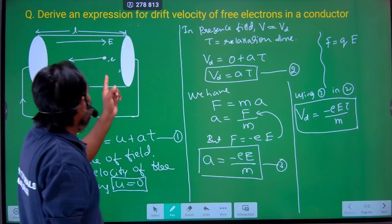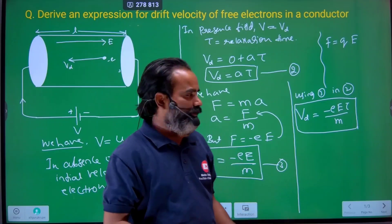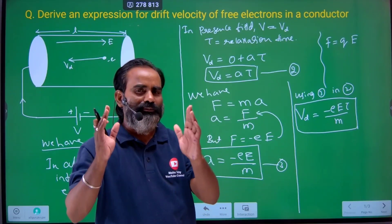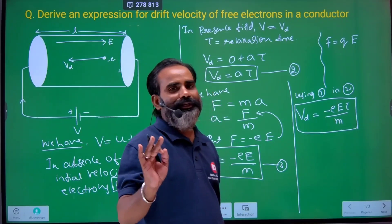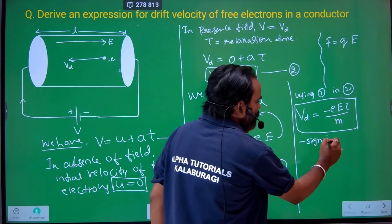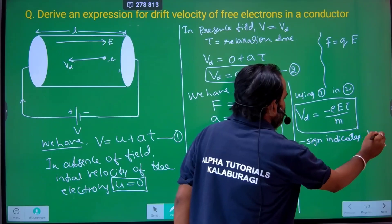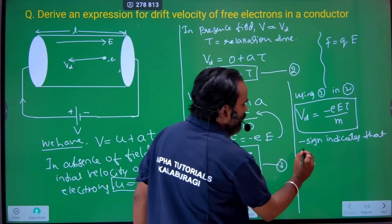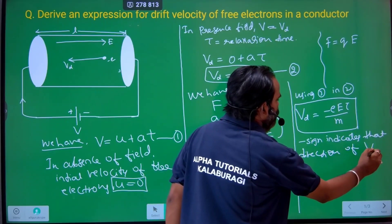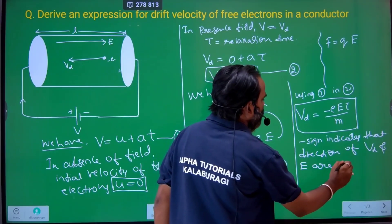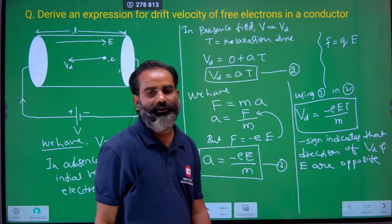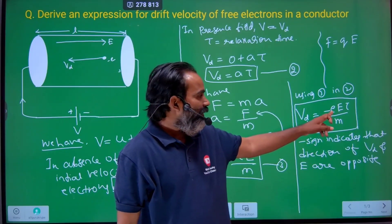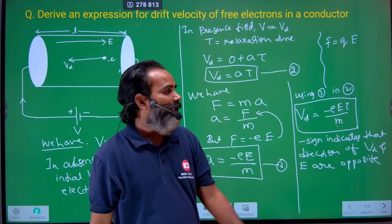Substituting into the equation, A equals minus eE divided by m. Substituting this into Vd equals A tau, we get Vd equals minus eE tau divided by m. The negative sign only indicates direction — that Vd and E are in opposite directions. The magnitude of drift velocity is positive. So the negative sign indicates that the direction of Vd and E are opposite.